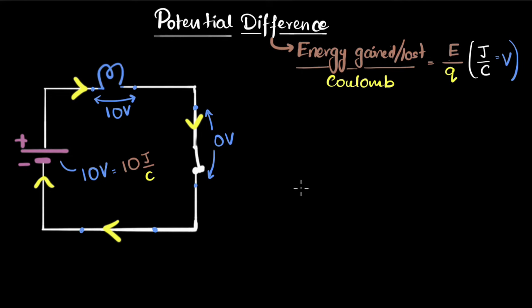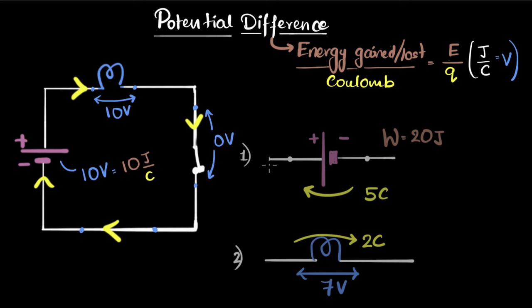Now, let's do a couple of more examples. So here's the first example. It's given that five coulombs of charges move through the battery, and the battery does work of 20 joules on them. What is the potential difference across the battery? How do we figure this out? Well, can you pause and try yourself first?